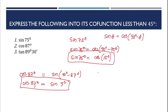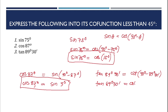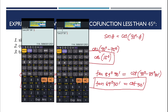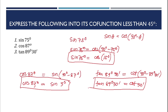For number 3, we have tangent 89 degrees and 30 minutes. The cofunction of tangent is cotangent of 90 degrees minus 89 degrees 30 minutes. Therefore, tangent 89 degrees 30 minutes equals cotangent 30 minutes. That is the answer — note that we want the result less than 45 degrees, and 90 degrees minus 89 degrees 30 minutes gives us only 30 minutes.